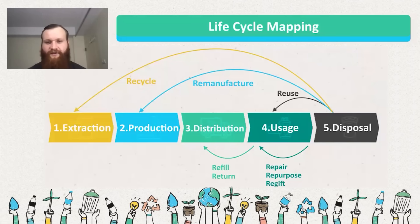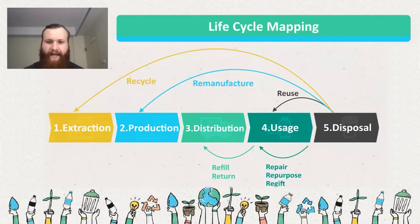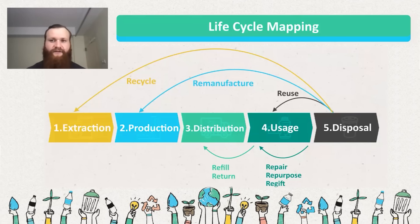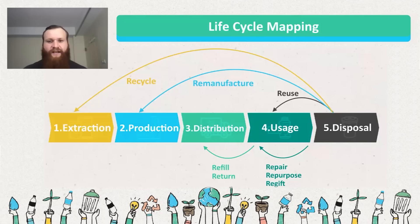Return and refill somewhat fit under the reuse stage, but they involve kicking a product back to the distribution network it originally came from. A classic example is glass milk cartons — you use them, leave them out, they're recollected, refilled with milk, and redistributed. Return and refill is a different relationship where the product keeps going back to the distributor for continuous use and to stay active in the economy.